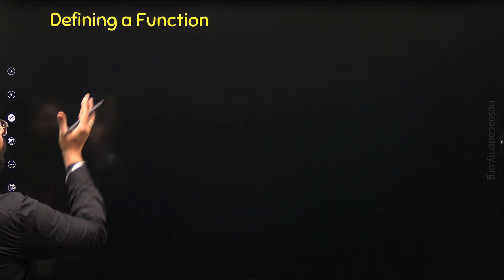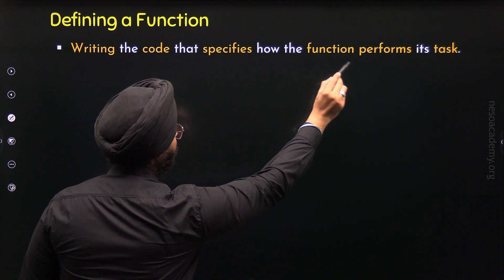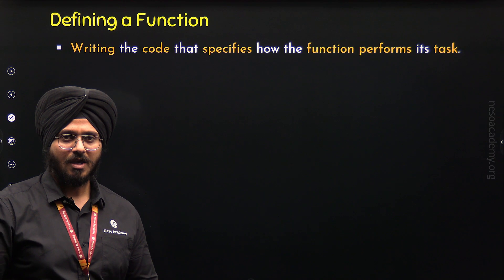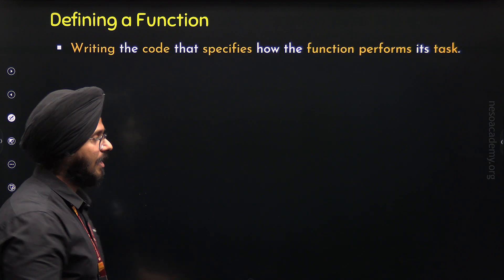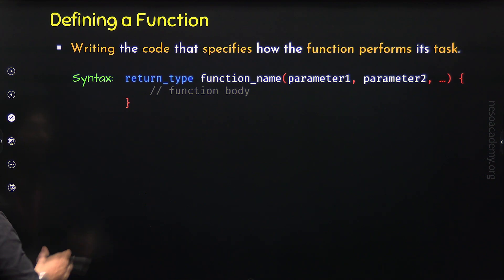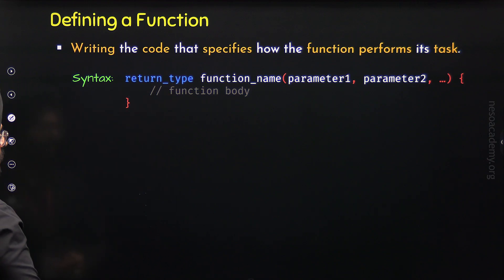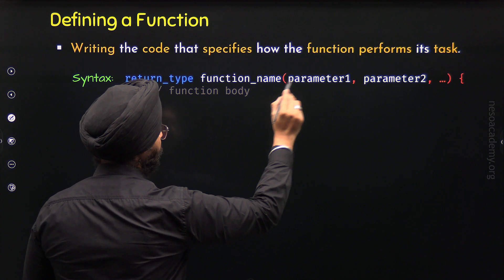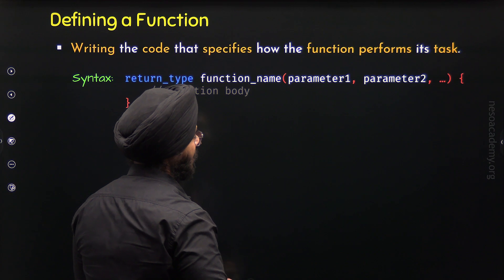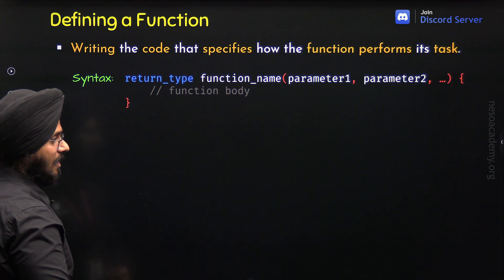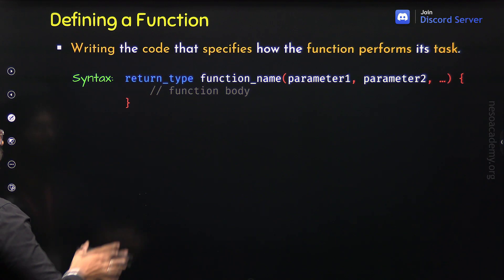Now let's move to the second topic: how to define a function. Defining a function means writing the code for the function that specifies how it performs its task. When we define a function, we write the code responsible for performing the task on behalf of the function. Here is the syntax of defining a function in C++. We need to specify the return type first — this represents the type of output returned by the function. Then we provide the function name. Within parentheses, we provide the parameters, which are the inputs to the function. We can provide as many parameters as we want. Then within braces, we define the function body, which is the code responsible for performing the task.